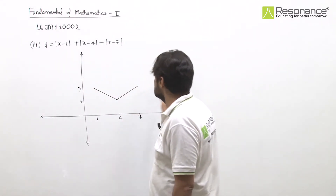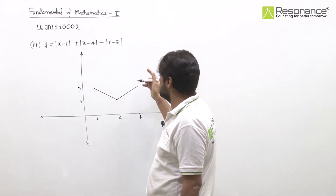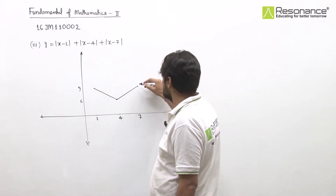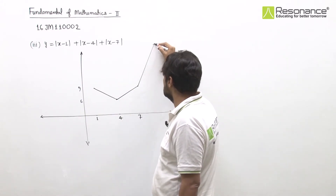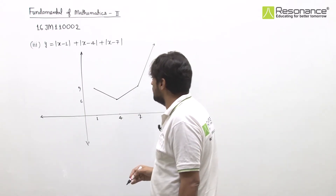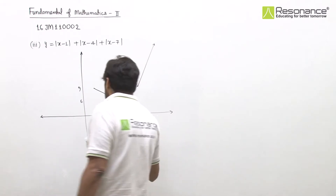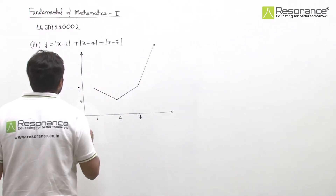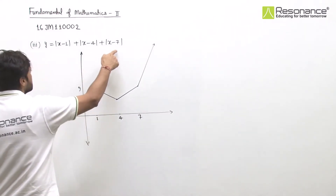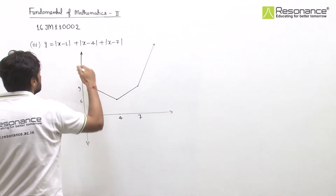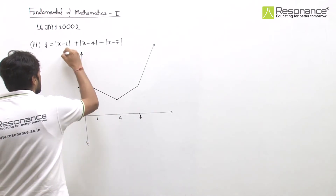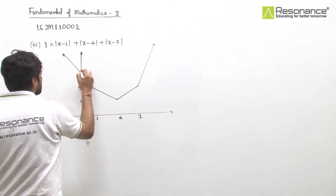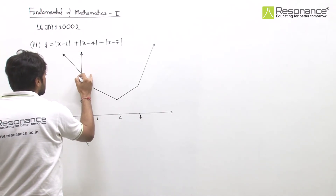For x greater than 7, say x = 100, the value will definitely be greater than 9. For x = 0: terms give 1, 4, 7 — so the value is 12. So at x = 0, the value is 12.